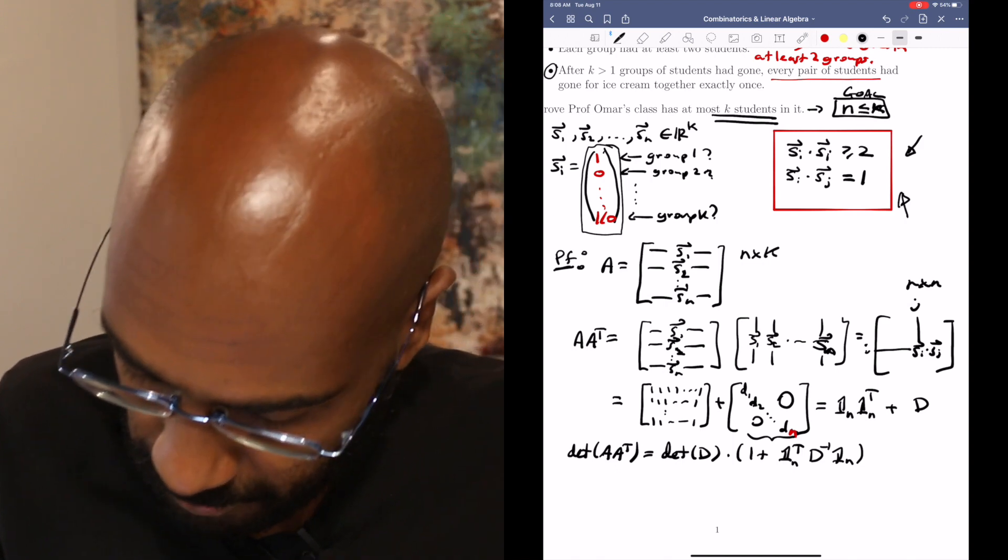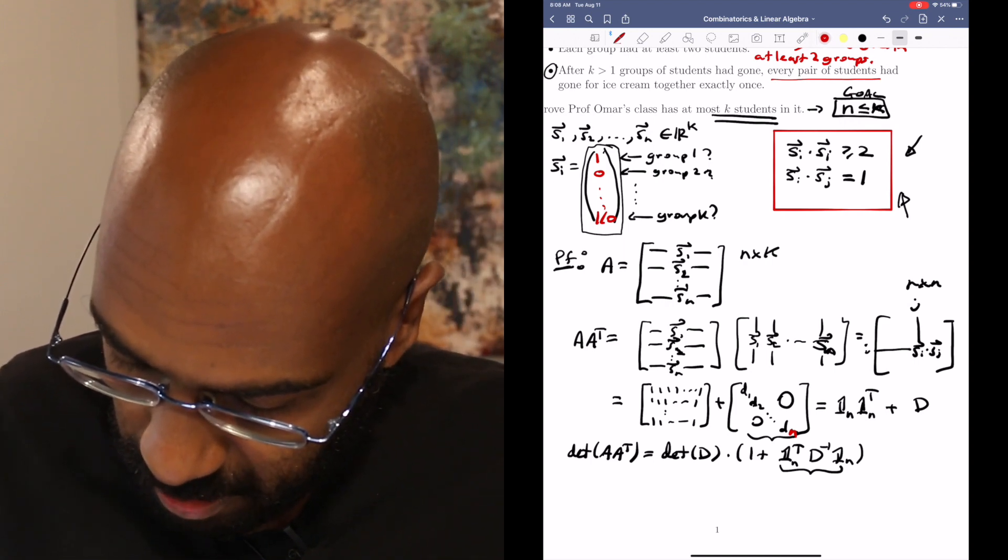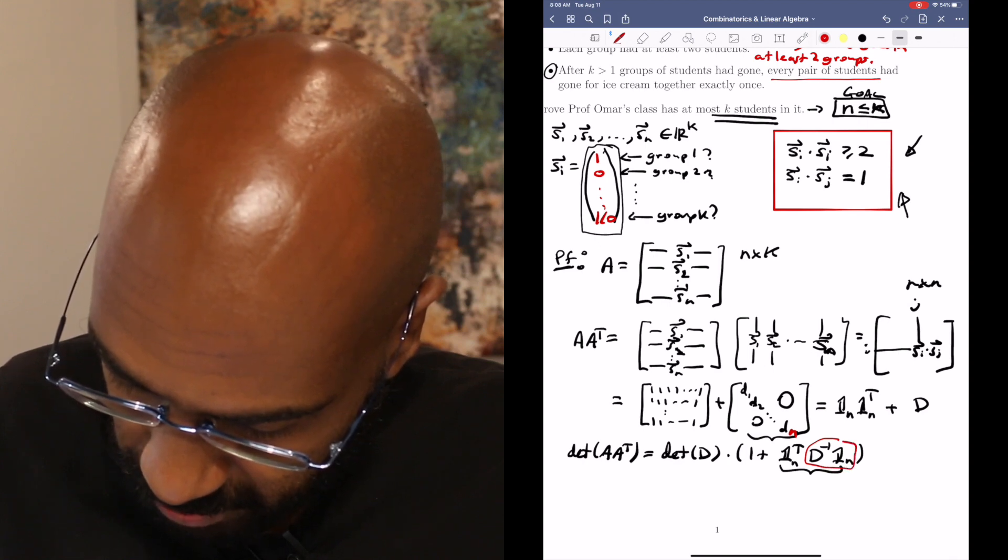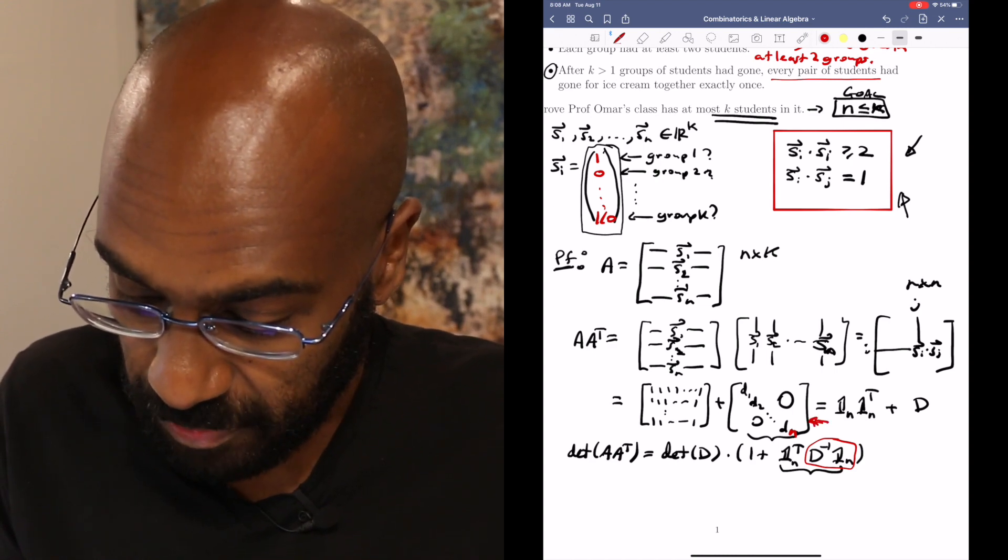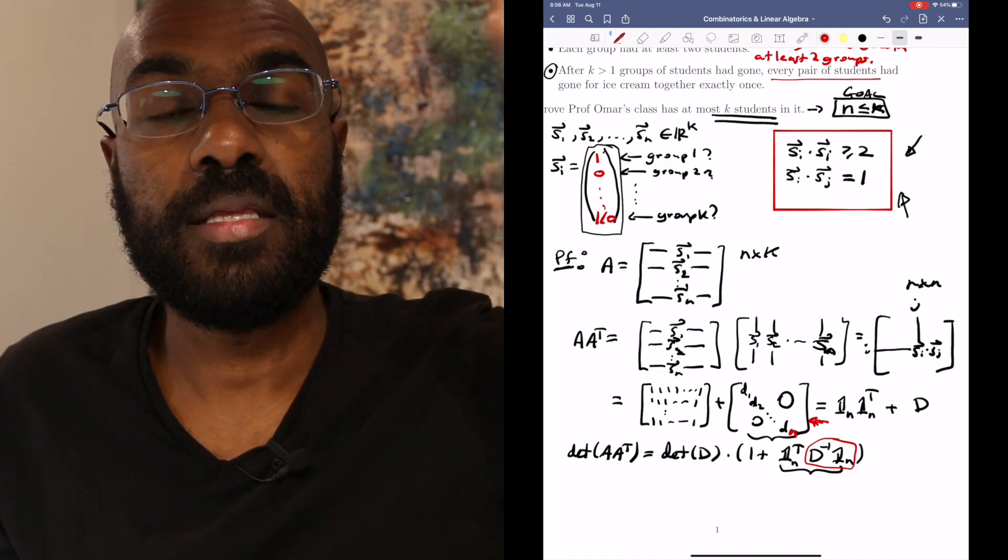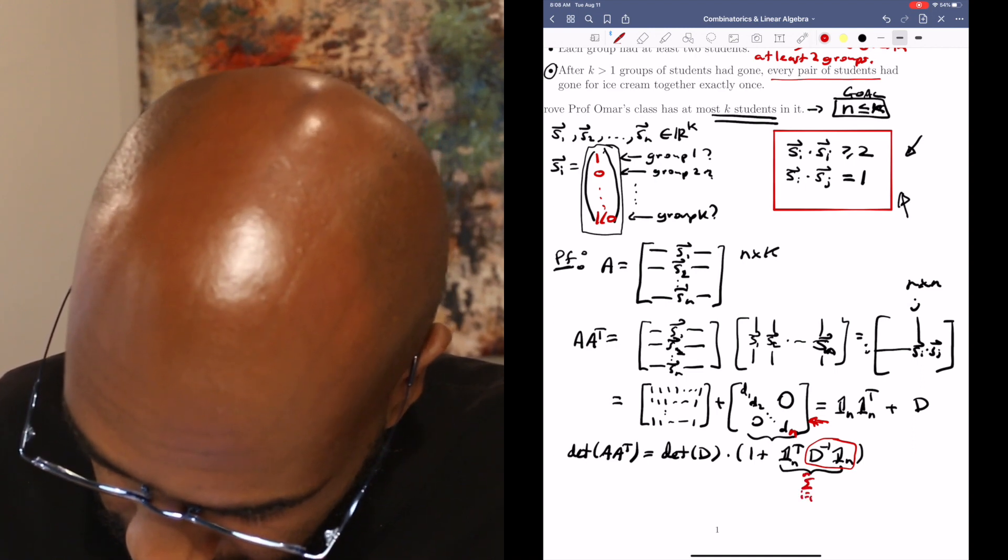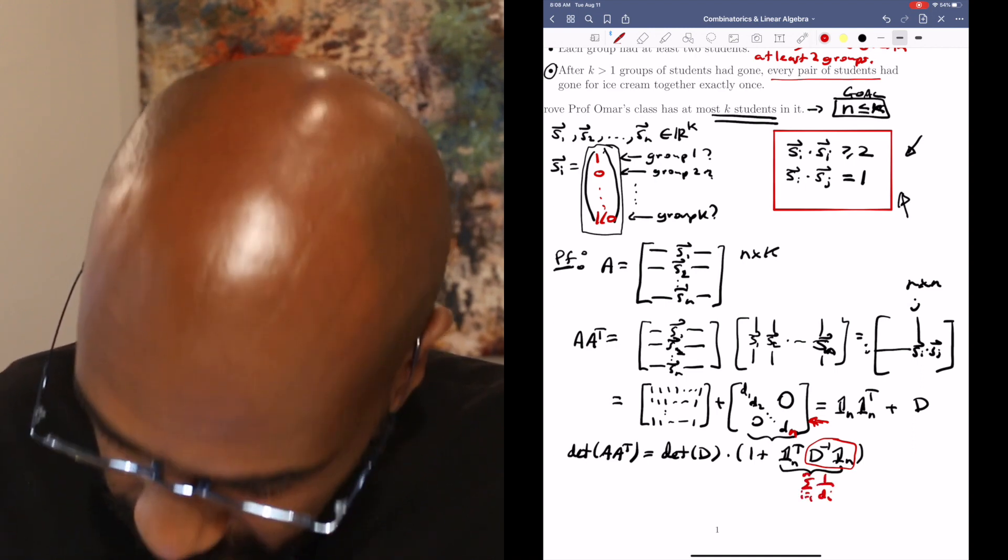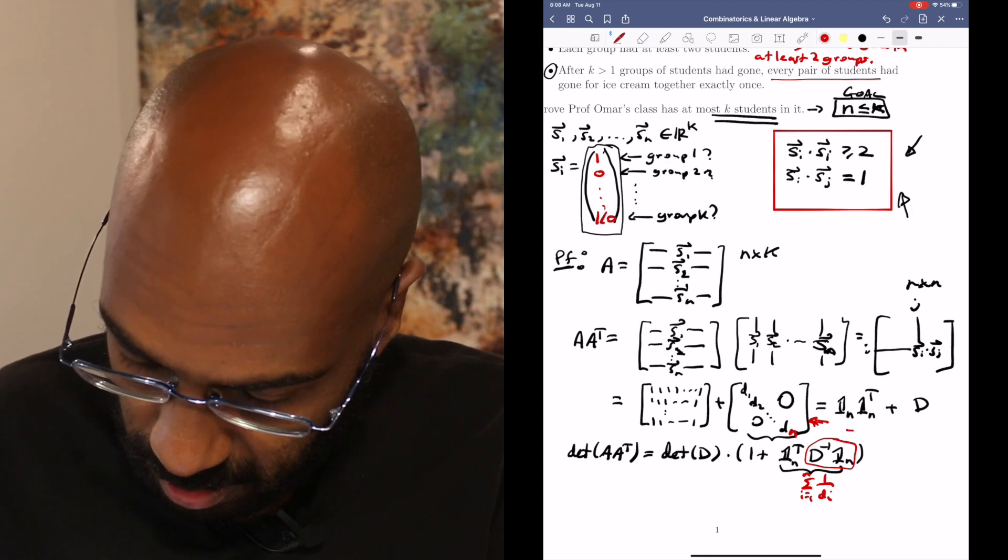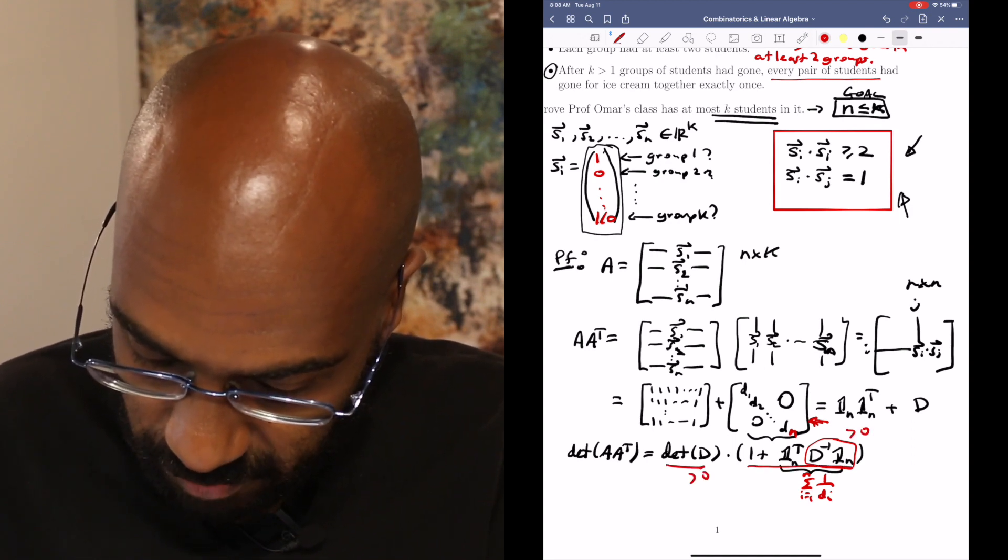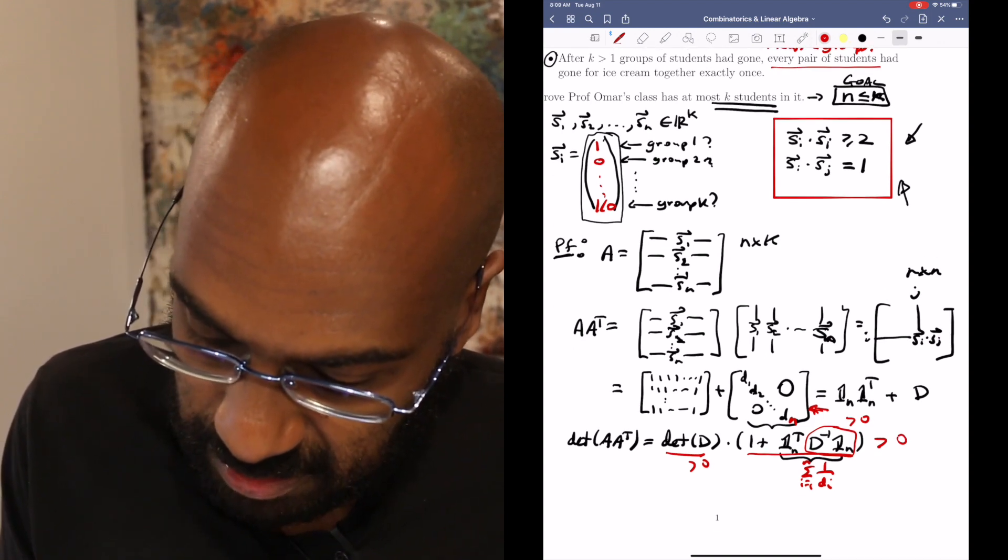Now this thing in the parentheses is actually a scalar. We can analyze what it is. So this thing right here is going to be, well you think about it, this part is going to be a vector whose entries are the reciprocals of this matrix here, because D inverse has as its diagonal entries the reciprocals of all of the diagonal entries of D. So this thing here is the sum of all of the reciprocals of the entries of the matrix D. And so this actually is a positive number in the parentheses. The determinant of D is positive, so this is a positive determinant matrix. And so AA transpose is itself invertible.